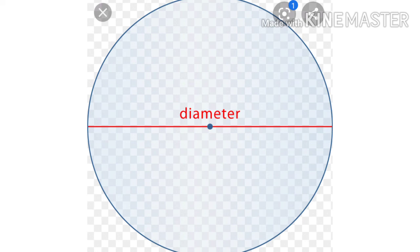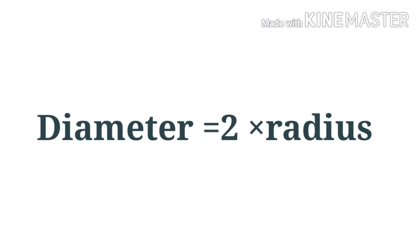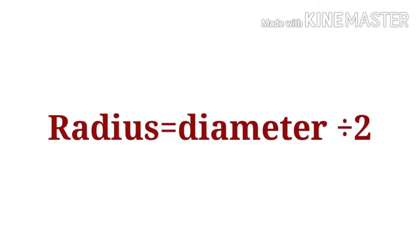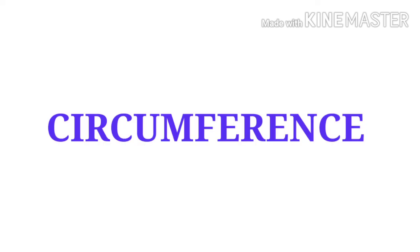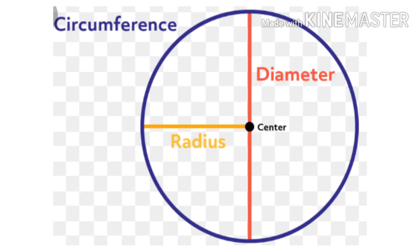Diameter. Diameter is equal to 2 times the radius — that is, two radii joined together make the diameter. The radius is equal to the diameter divided by 2, that is, the radius equals half the diameter.